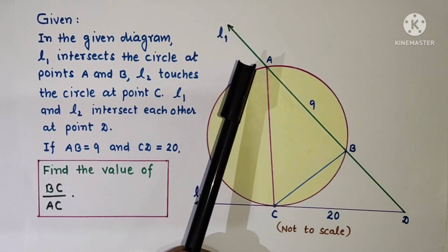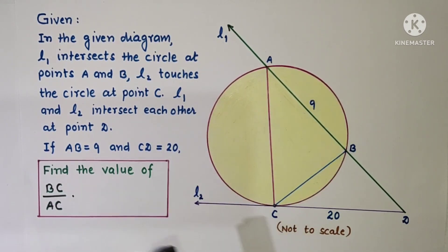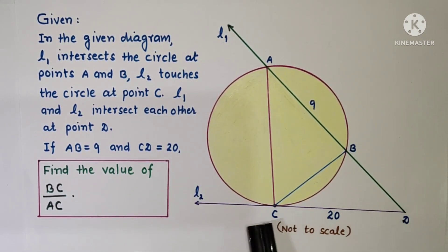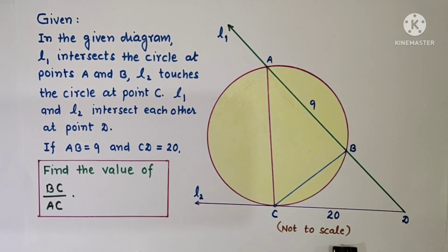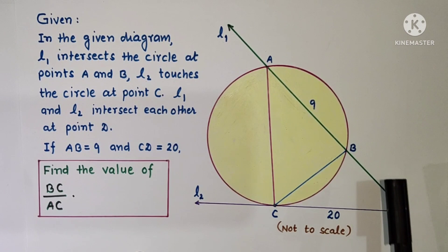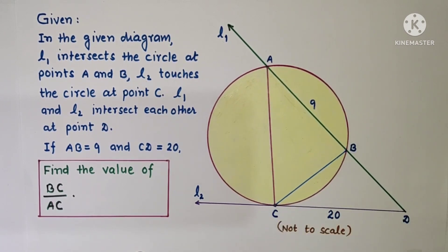We are given the length of segment AB as 9 and the length of segment CD as 20. The diagram is not drawn to scale. We have to find the value of BC upon AC.